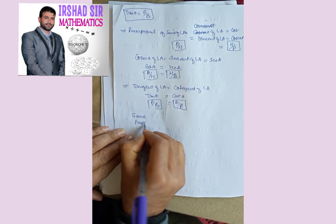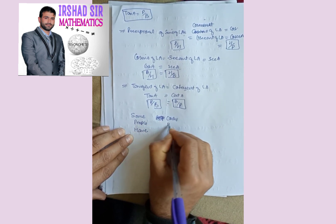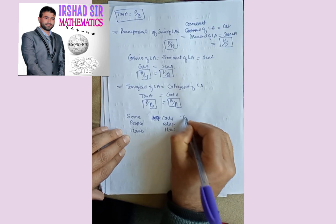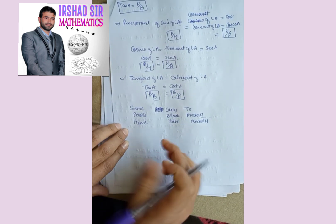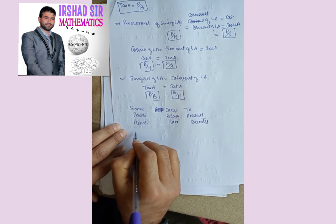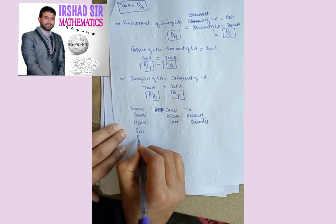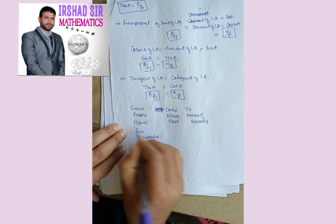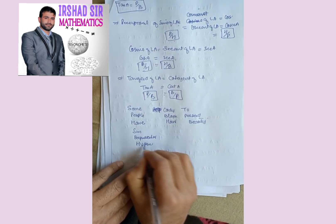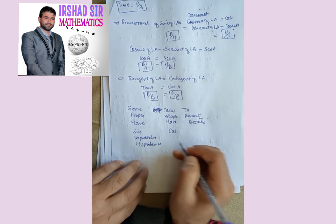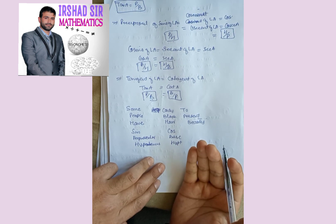To remember all six trigonometric ratios, we use the mnemonic: 'Some People Have Curly Black Hair To Present Beauty.' We write the first letters of these words: S-P-H, C-B-H, T-P-B. Here S means sine, P means perpendicular, H means hypotenuse — so sine is perpendicular by hypotenuse.